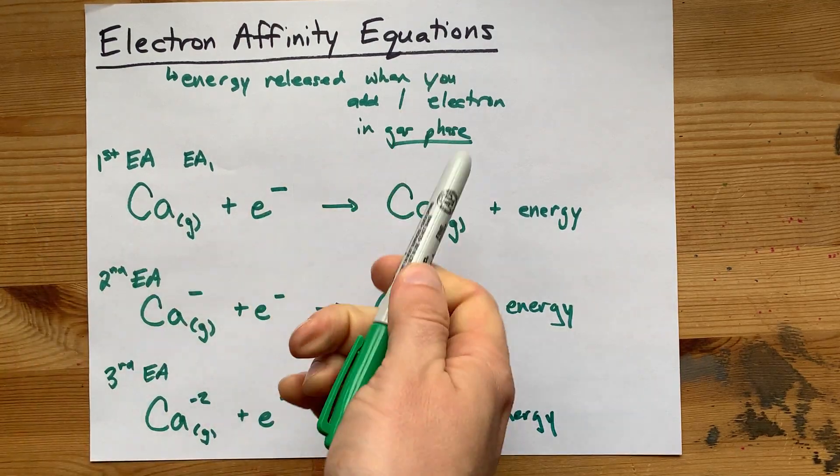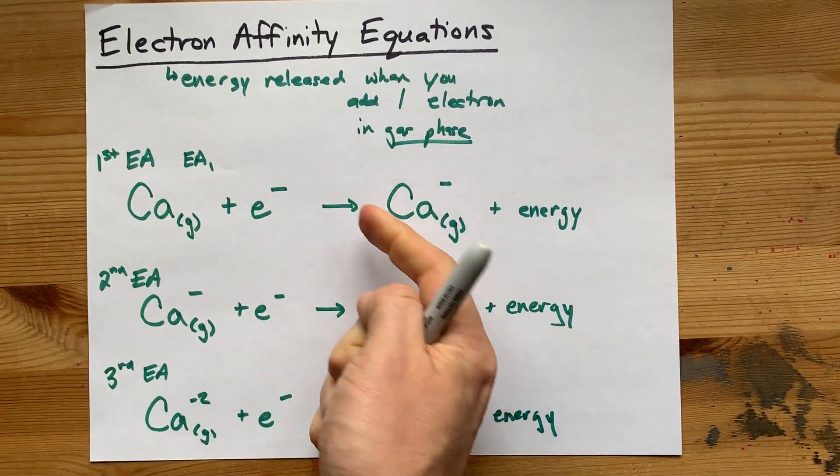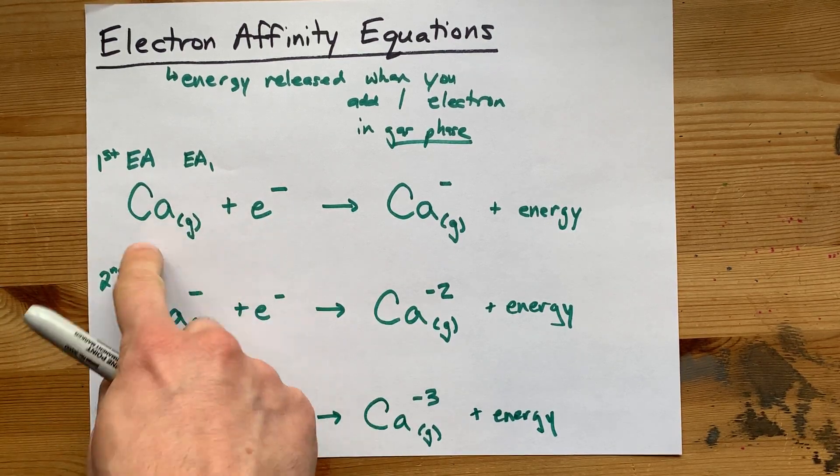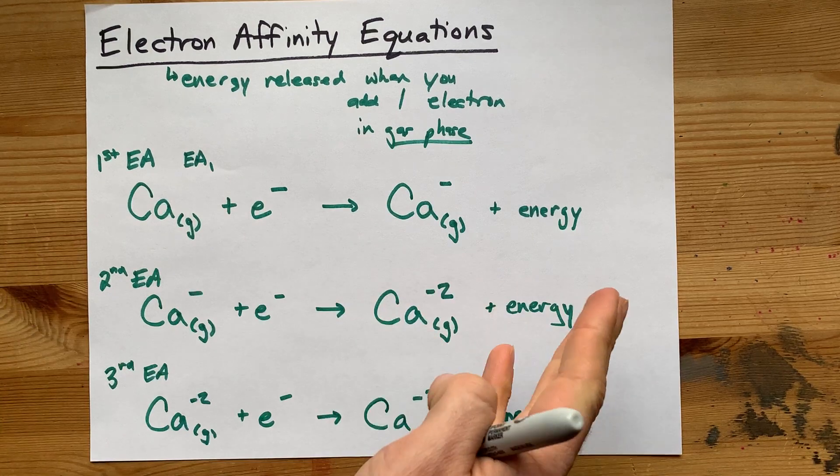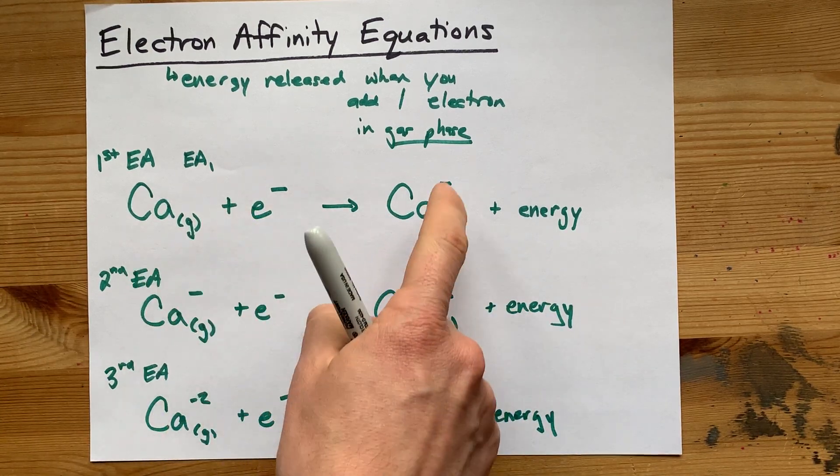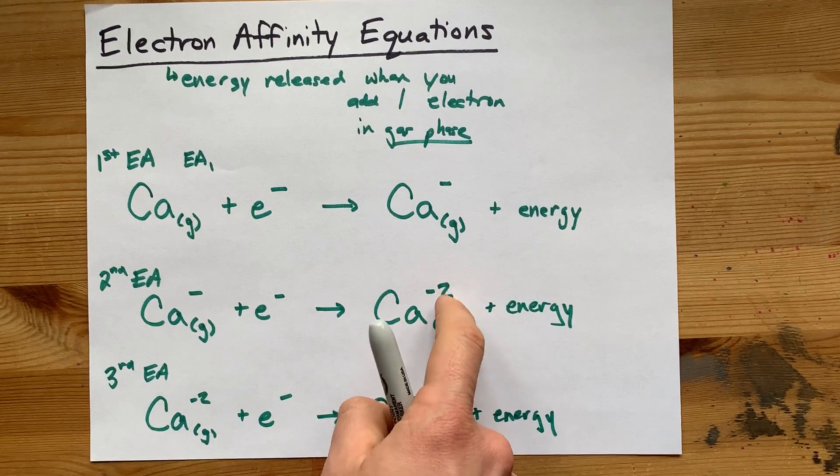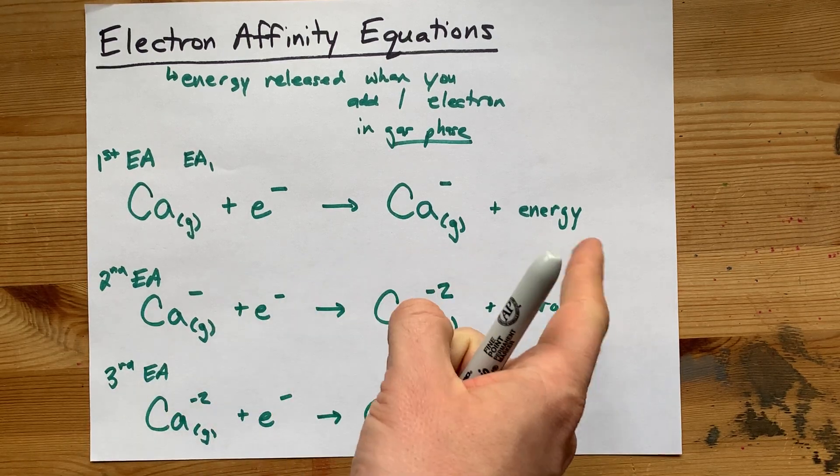Electron affinity is the process of adding electrons to particles. Doesn't matter if they're metals, nonmetals, metalloids, noble gases. Doesn't matter. Add an electron, give it a negative charge. Add another electron, give it a minus two charge, etc.